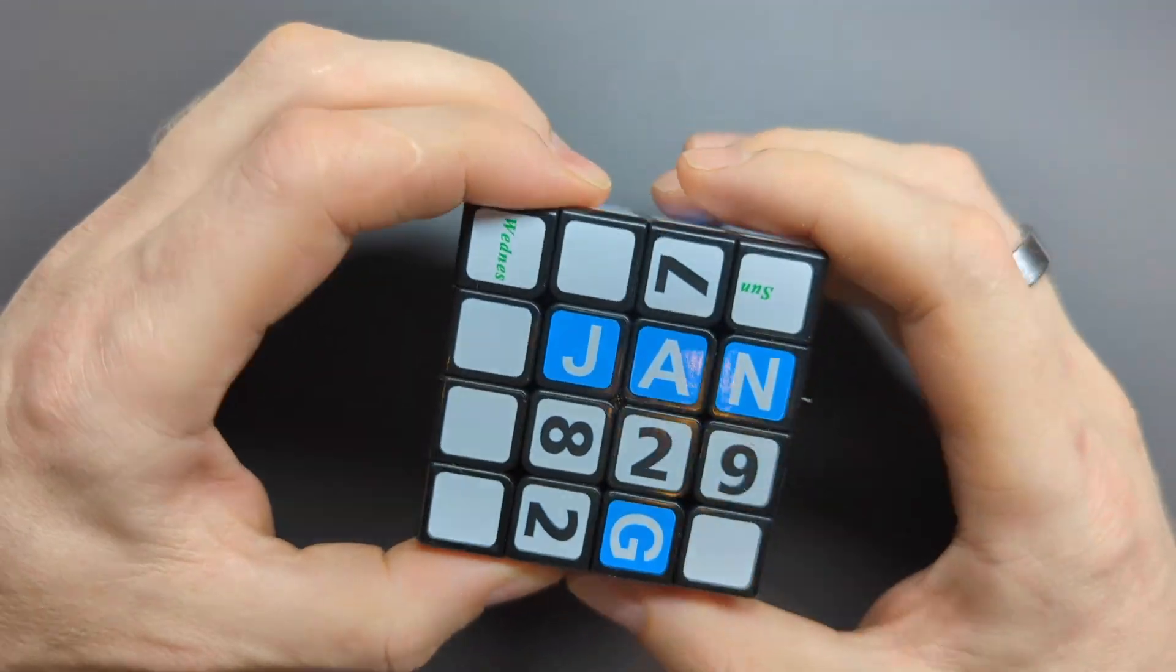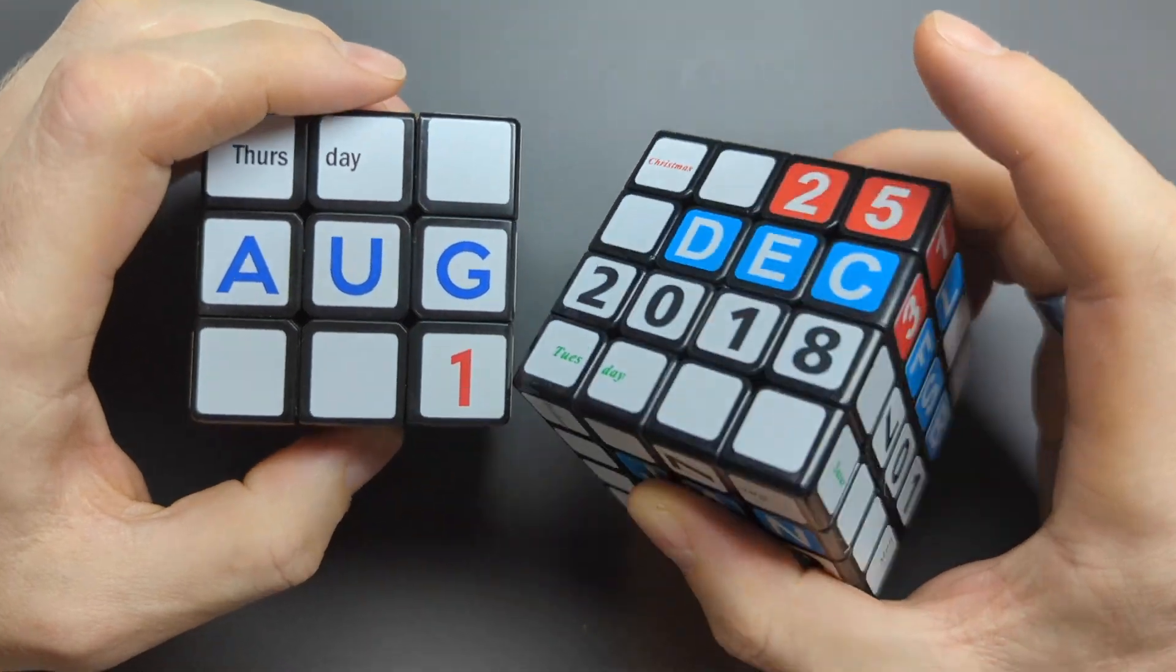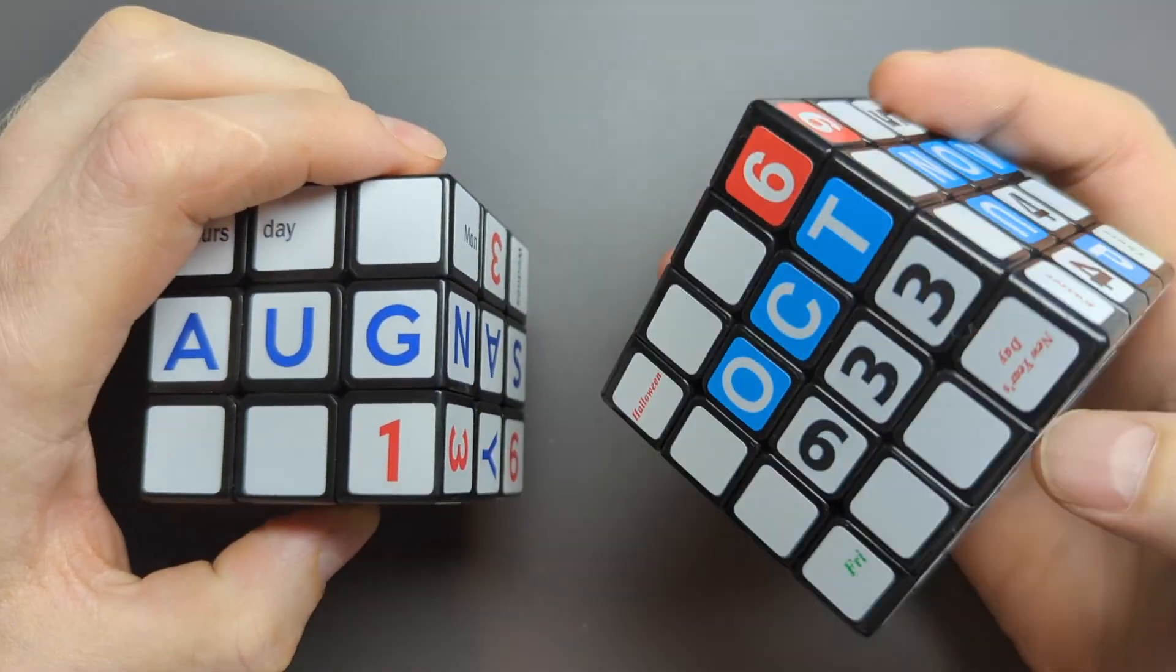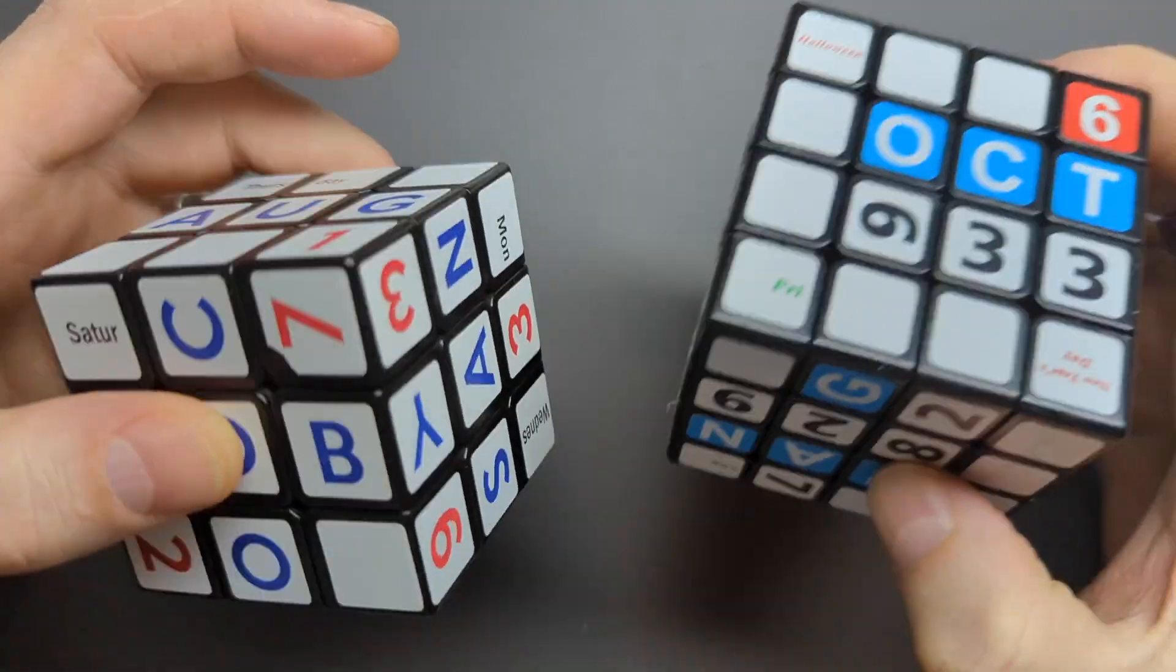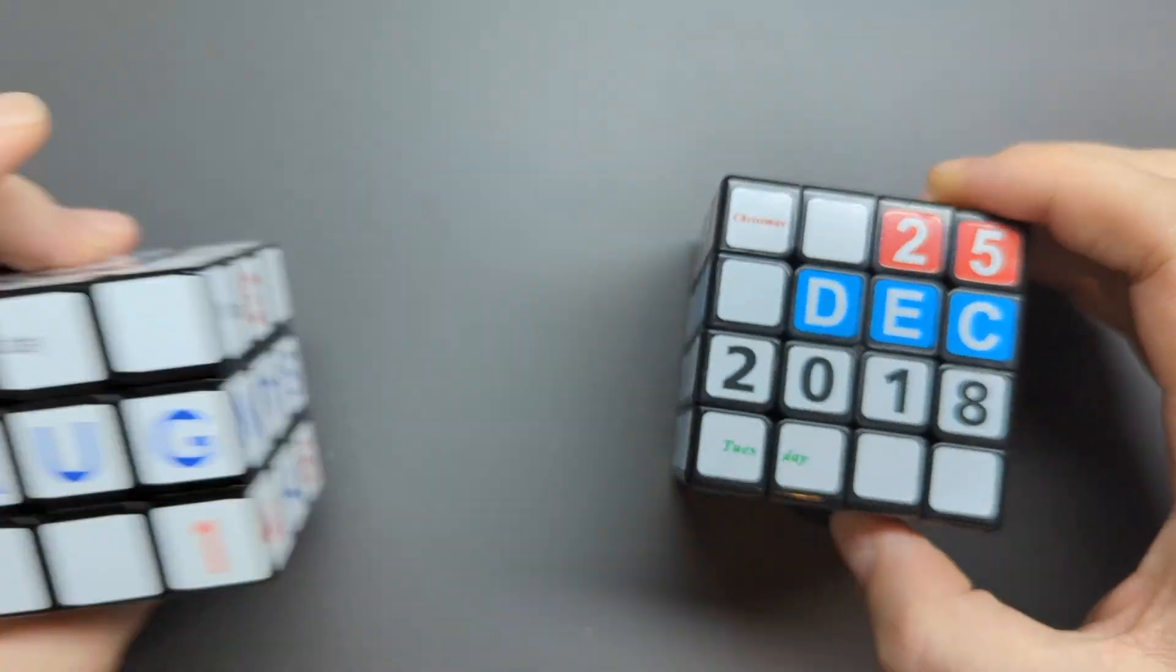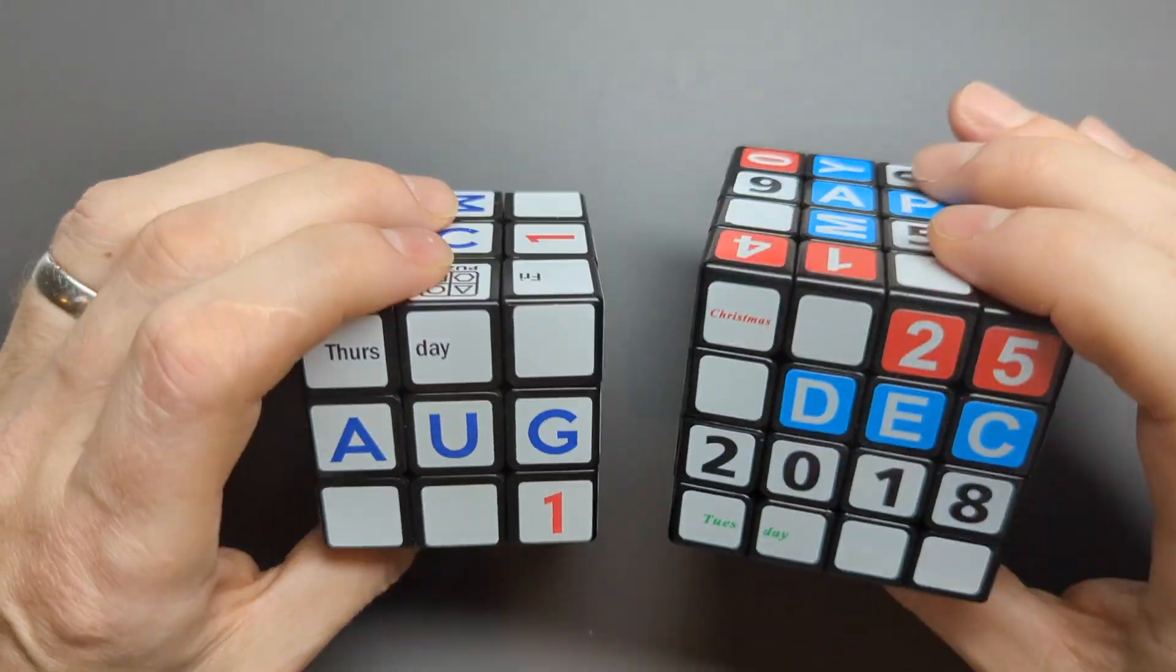The idea of these cubes is that they put the stickers on in such a way that you can order them into any particular date you want. So today is indeed Thursday, August the first, so I'm gonna have a go and see if I can set that up.